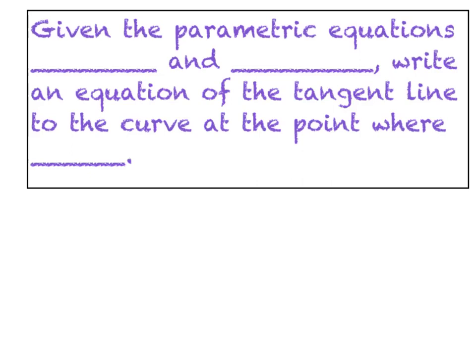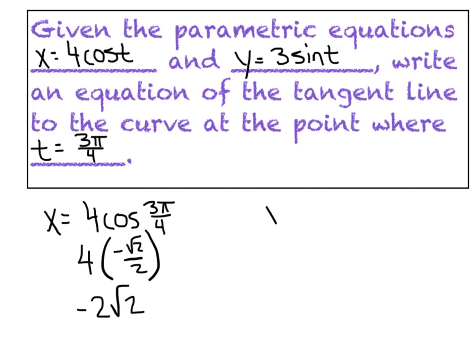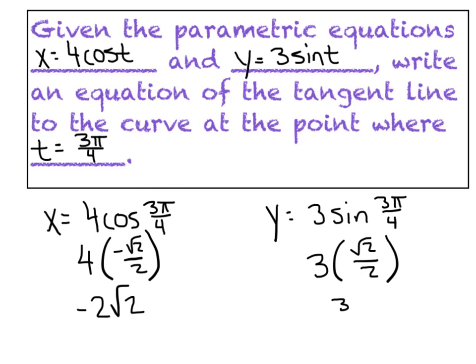Example two: given x = 4cos(t) and y = 3sin(t). You're probably expecting some circular or elliptical behavior, and you'd be correct. But we're not graphing it — we just want the equation of the tangent line at t = 3π/4. We need the x-coordinate, the y-coordinate, and the slope. The x-coordinate is 4·cos(3π/4) = 4·(-√2/2) = -2√2. The y-coordinate is 3·sin(3π/4) = 3·(√2/2) = 3√2/2.